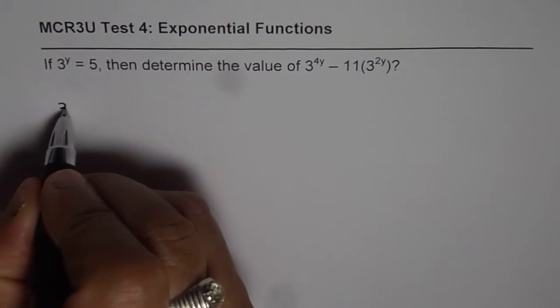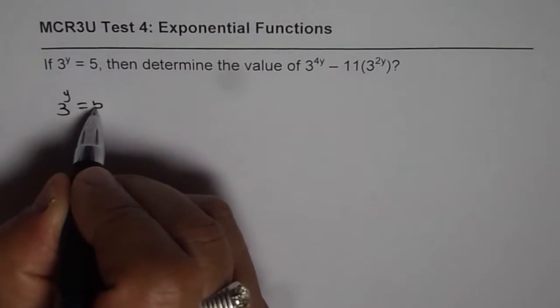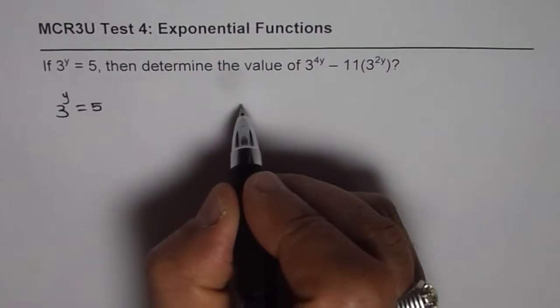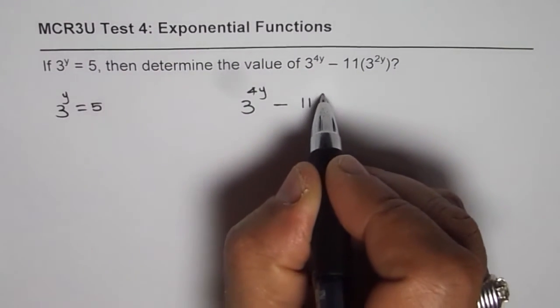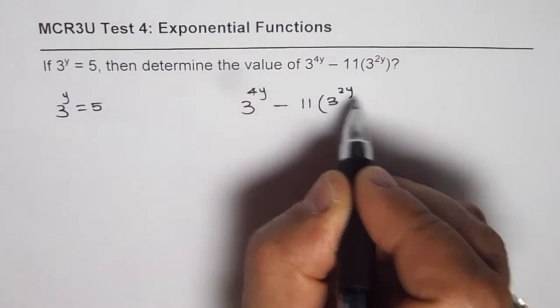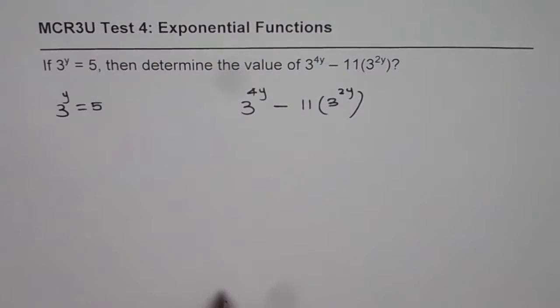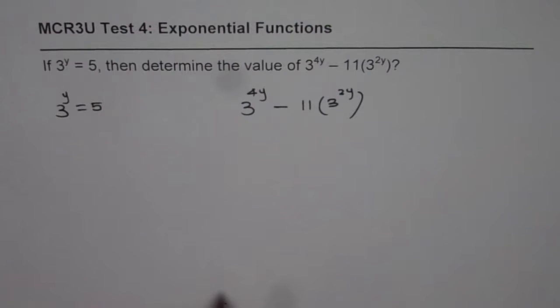So what is given to us here is 3 to the power of y equals to 5 and what we need to find is 3 to the power of 4y minus 11 times 3 to the power of 2y. Now logarithm is definitely a solution which has been used by Amandeep but I will give you an easy solution.